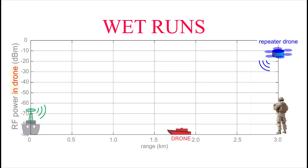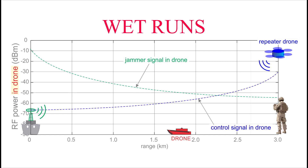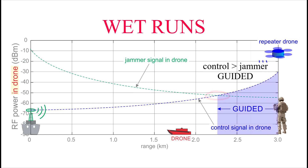Here's how the wet runs work. The jammer power delivered to the drone's receiver increases as the drone gets closer to the ship, because it's getting closer to the jammer. At the same time, the control signal power is decreasing as the drone gets farther from its transmitter. The drone is guided by the operator as long as the control signal power in the drone is sufficiently higher than the jammer power. For illustration purposes, let's say the drone is guided as long as the jammer power is below the control signal power — that's equivalent to a jamming-to-signal ratio of 0 dB.